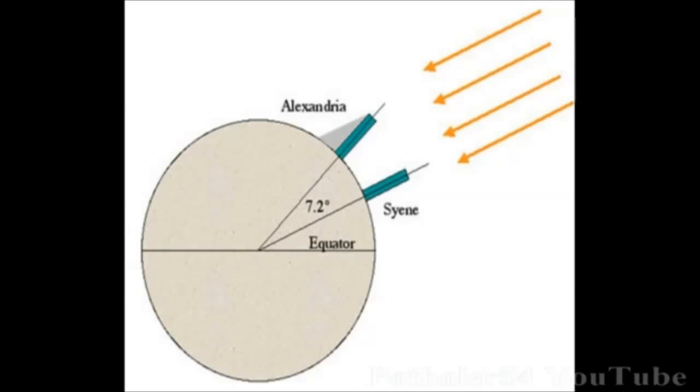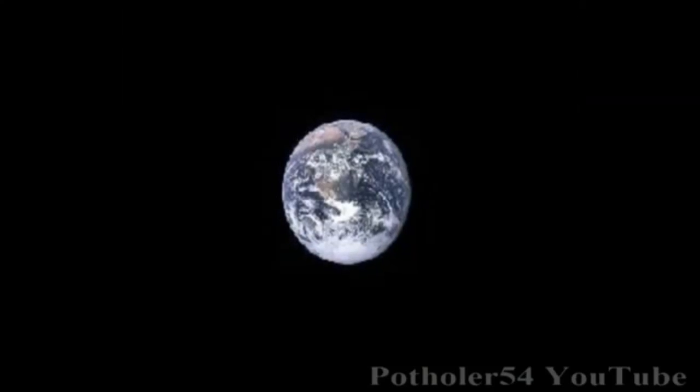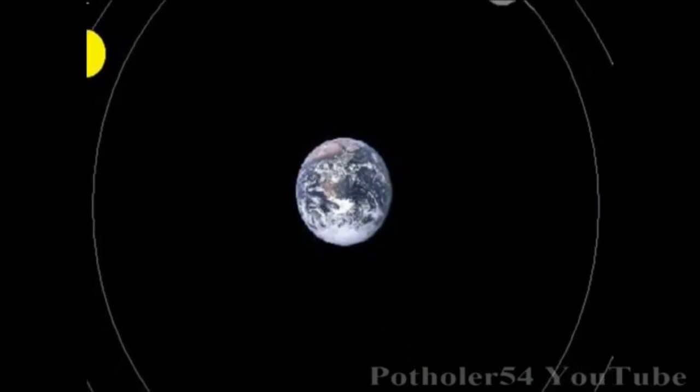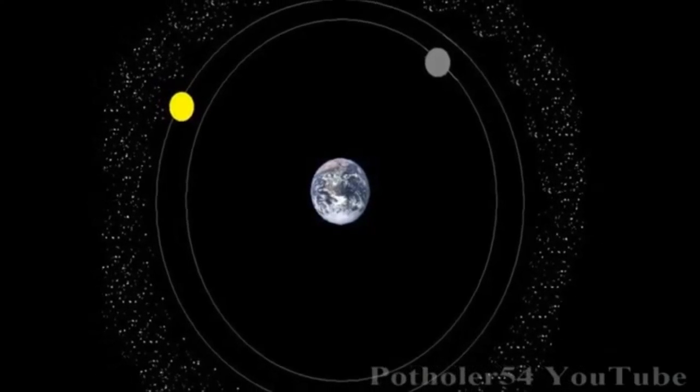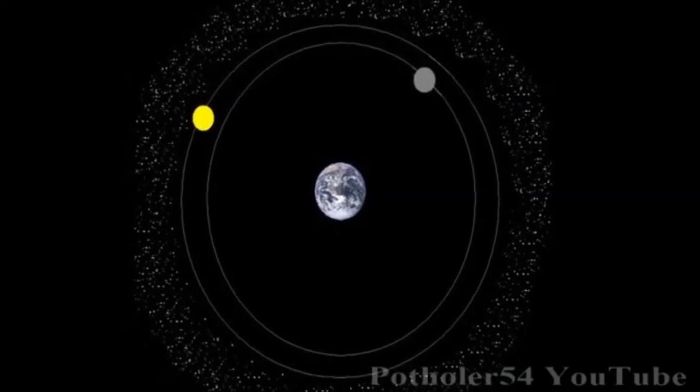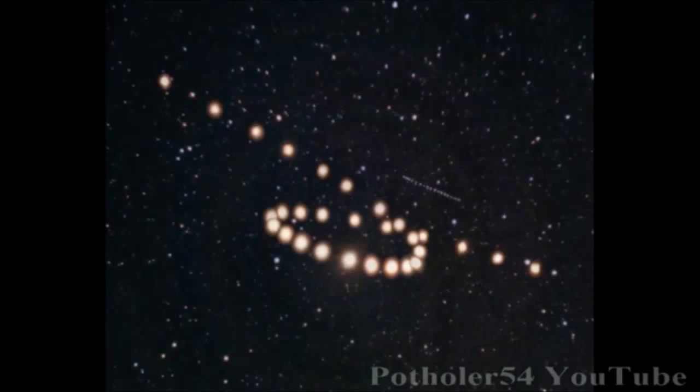But while the Earth might be spherical, the dogma of a fixed Earth still held sway, backed by a powerful church. Problem was, this didn't fit the observable evidence, especially the observation that some wandering stars, or planets in Greek, had very erratic orbits around the Earth.